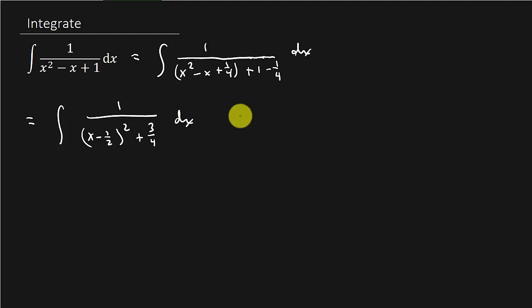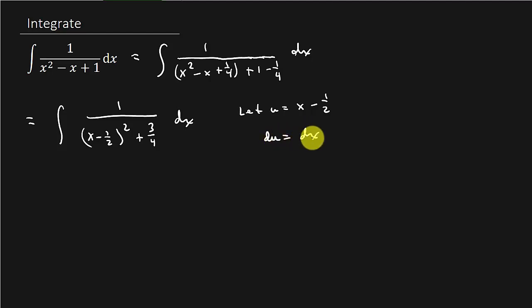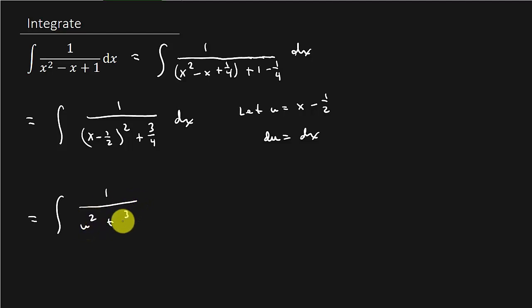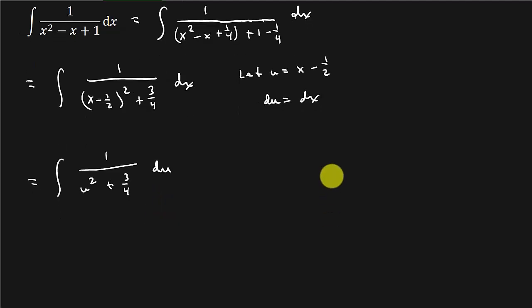Now let's do some u-substitution. We're going to let u equal x minus 1 half, so that means du is equal to dx. This gives us 1 over u squared plus 3 fourths du. We substitute u in for x minus 1 half, and dx gets replaced with du.